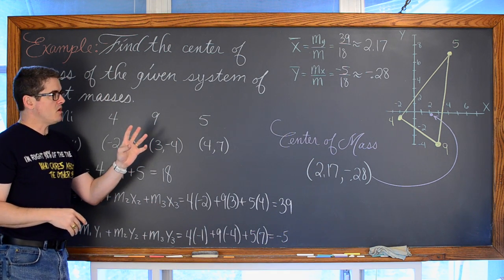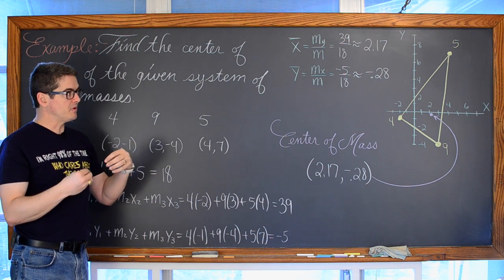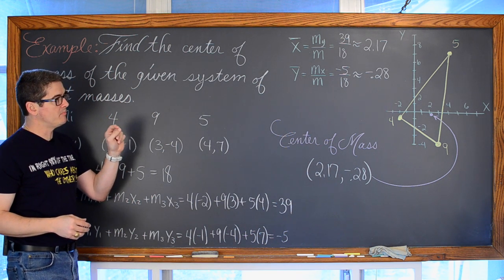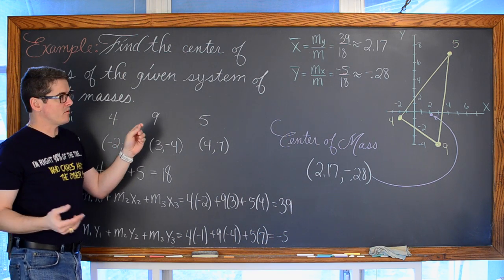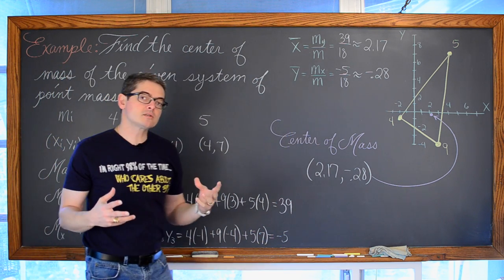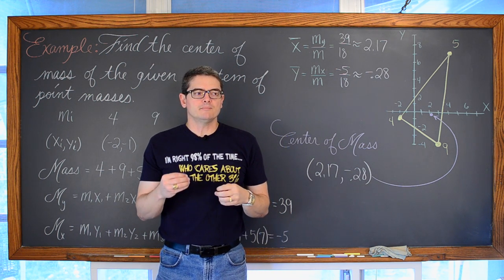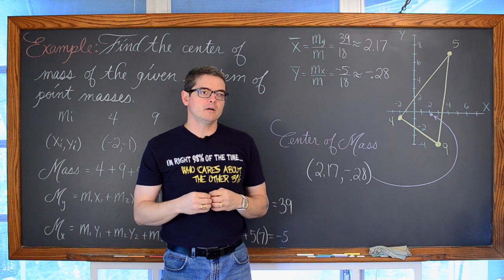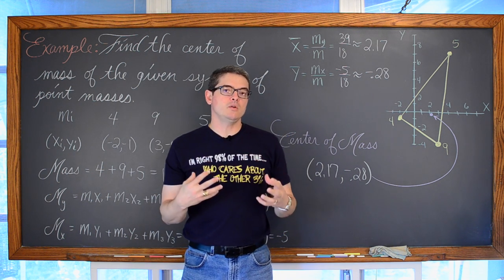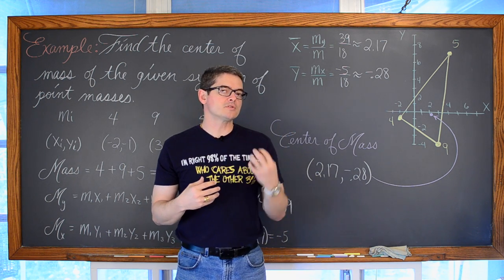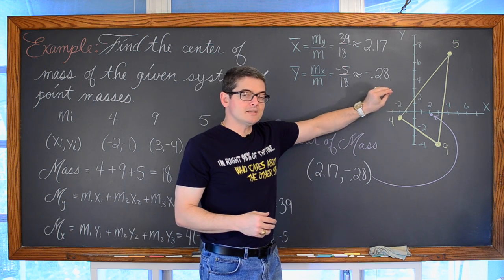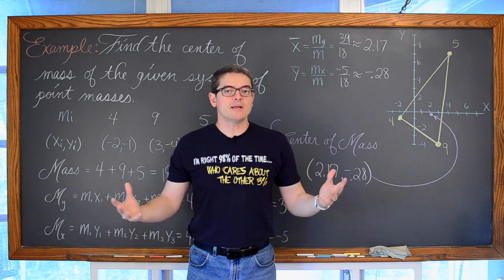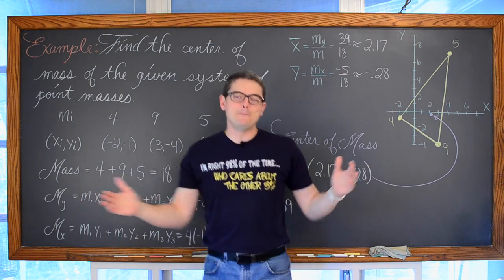Now that the diagram is drawn it looks like a triangle — a two-dimensional figure — but in this lesson we were only talking about point masses; mass only exists at those three points. In the next lesson we will be talking about the centroid of a planar lamina, which is a thin plate of material with uniform density. That is the end of this lesson. I'm Mr. Tarrou — go do your homework!